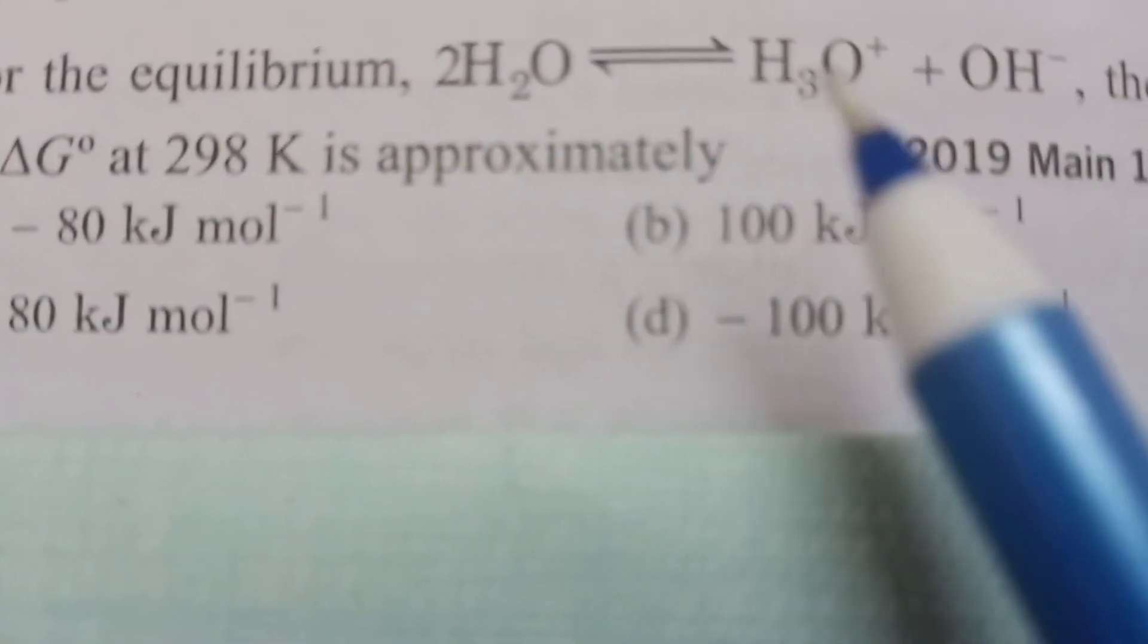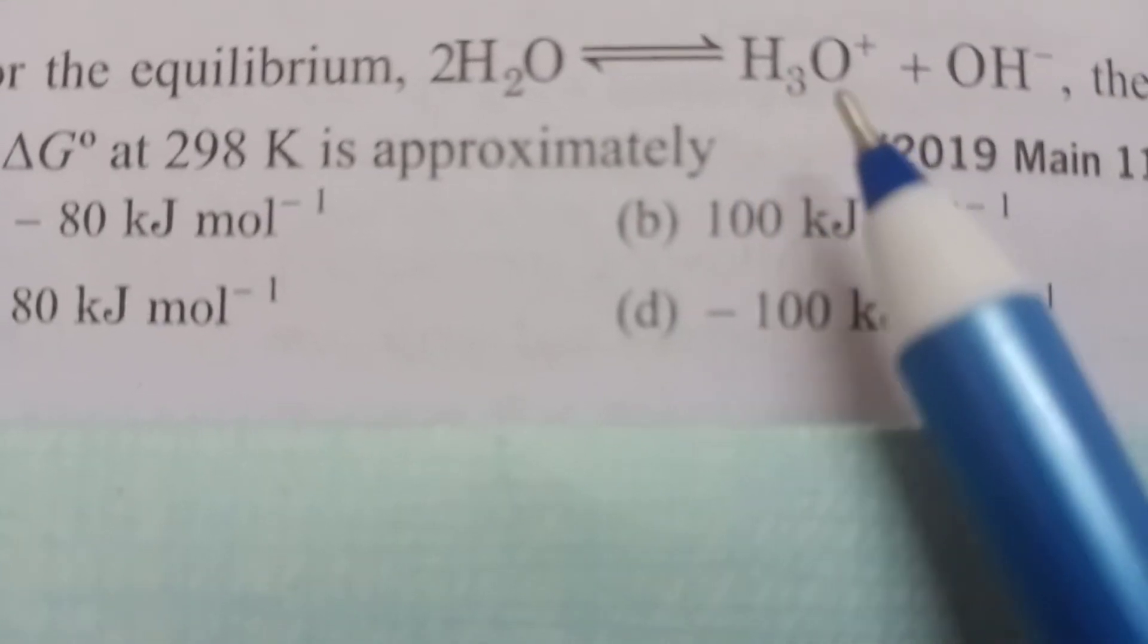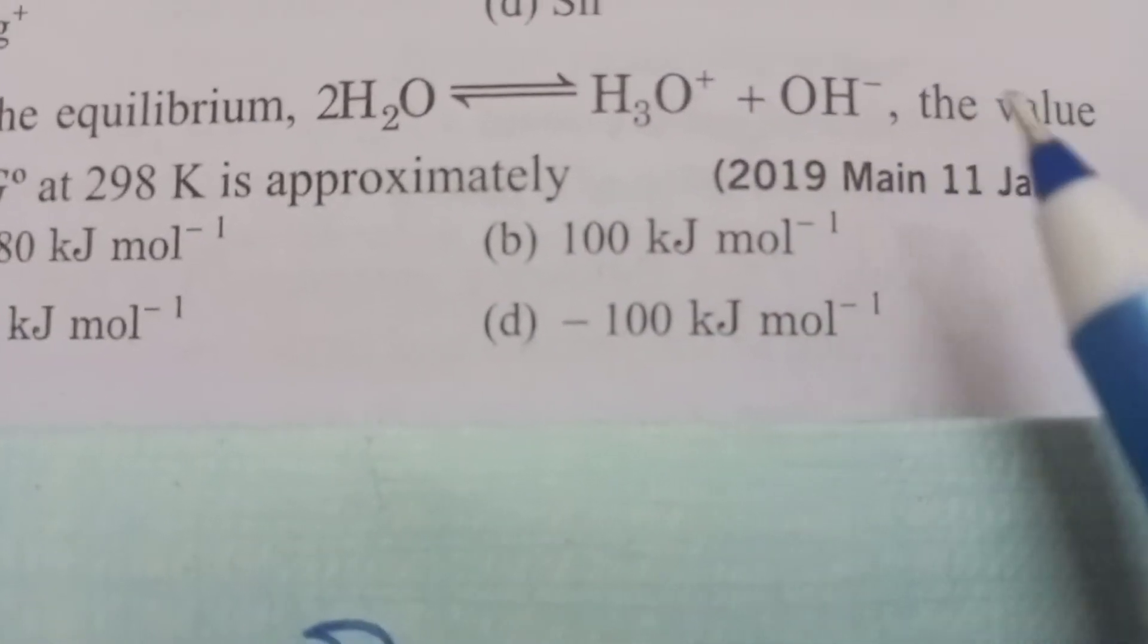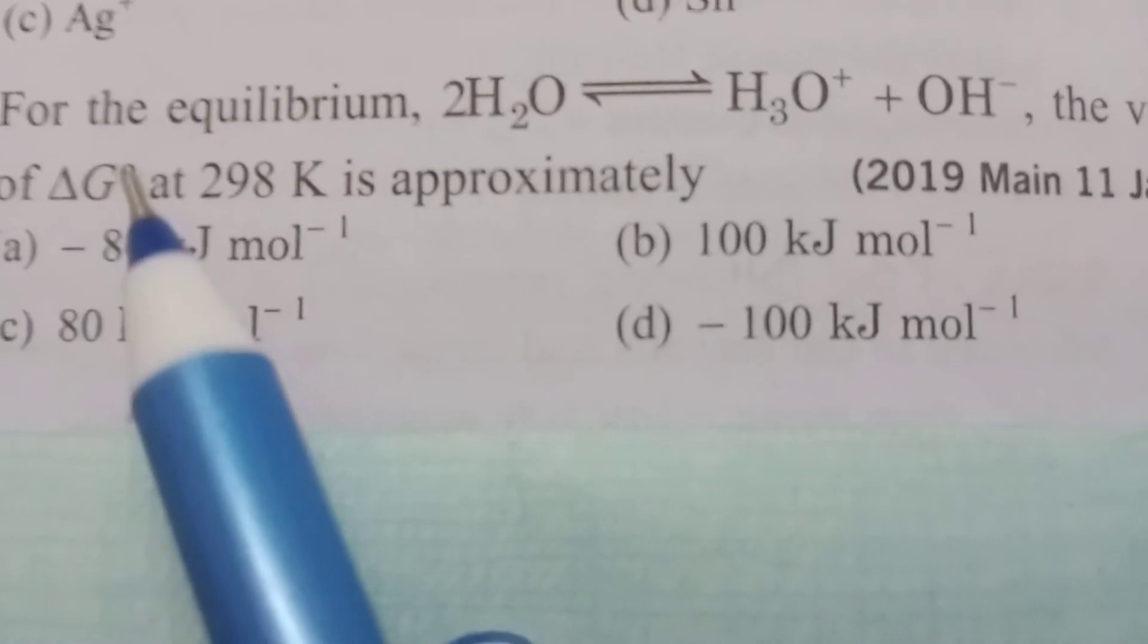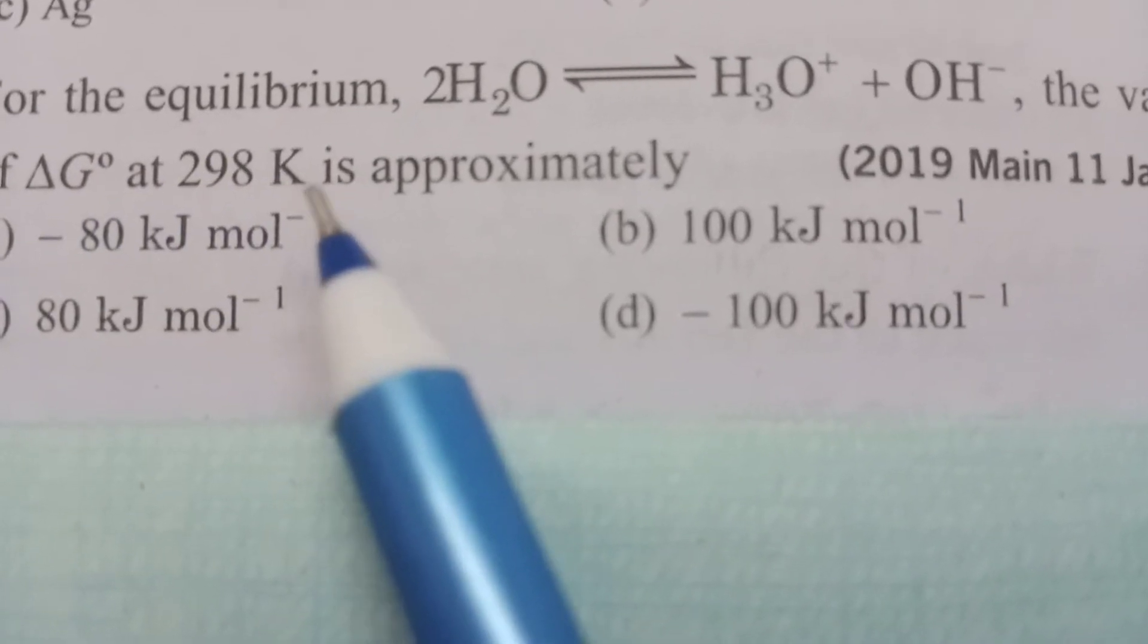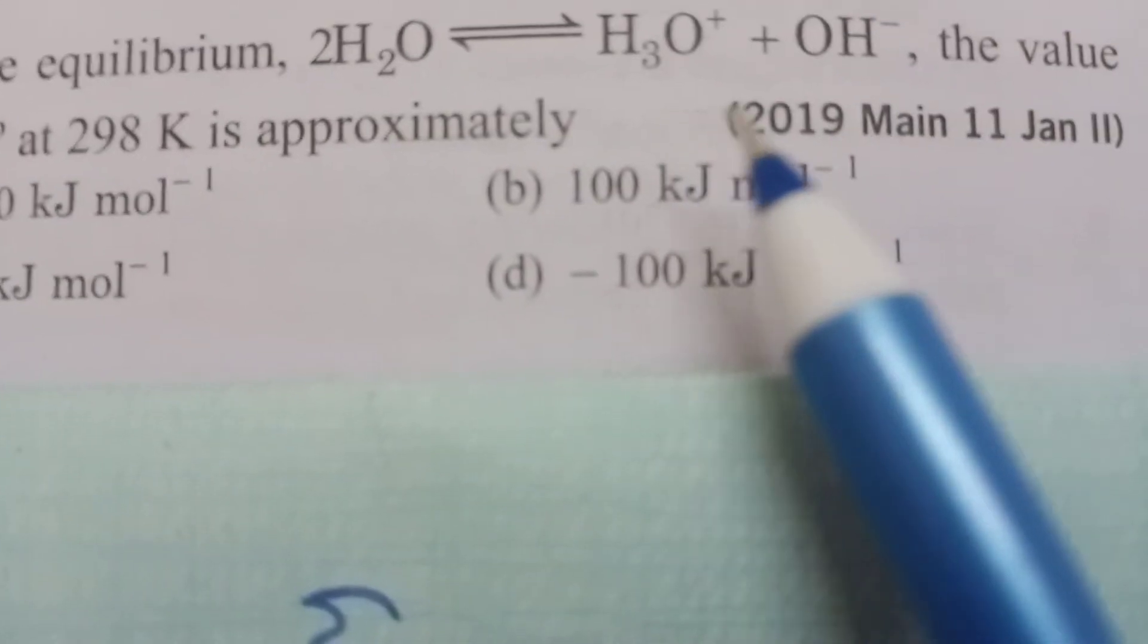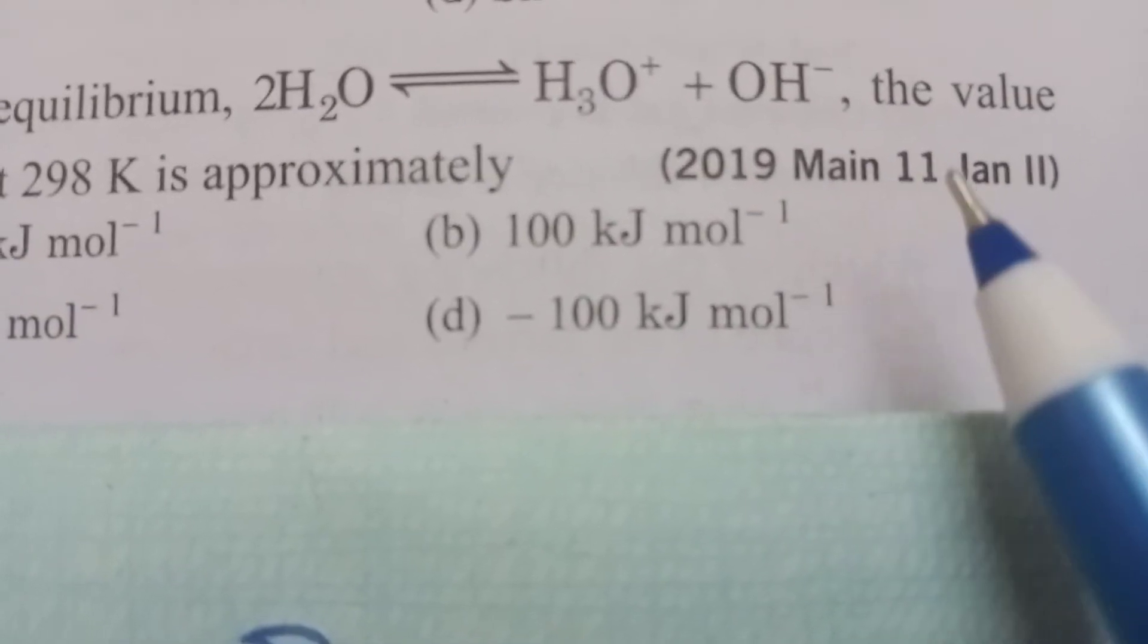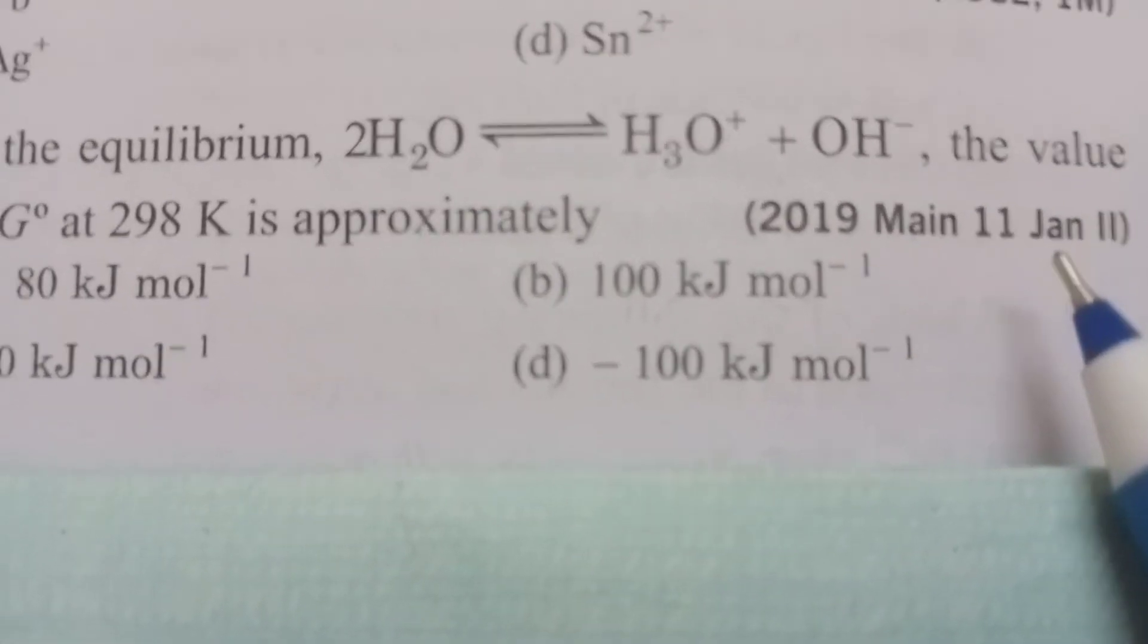For the equilibrium 2H₂O ⇌ H₃O⁺ + OH⁻, the value of ΔG° at 298K is approximately—this was from 2019 JEE Main, January 11th. Please note it.